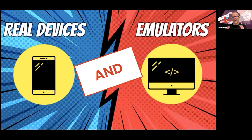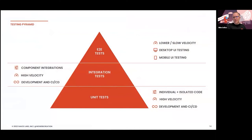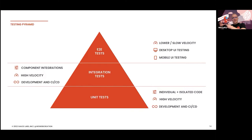We all know the testing pyramid, with multiple layers: your unit test layer, your integration test cases, your end-to-end test cases — and every layer has its own responsibility. When you go higher in that pyramid, you use fewer test cases than in the previous layer. And when we look at mobile testing, nine out of ten times mobile testing takes part in that end-to-end test layer, where we need physical mobile devices or an emulator and a simulator.